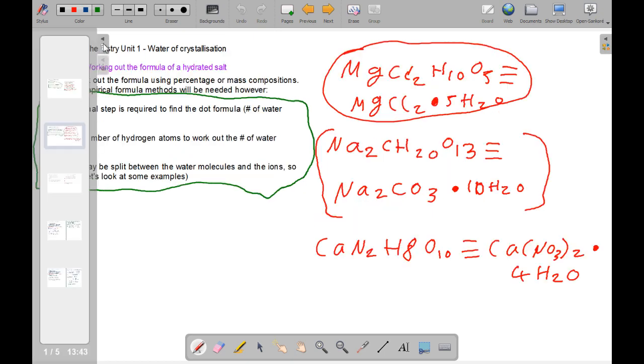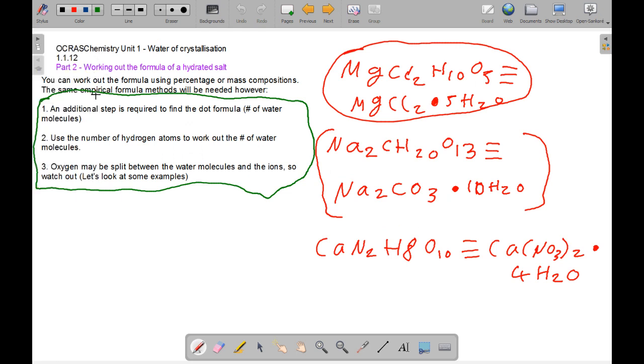I'm going to move on to part two now, working out the formula of a hydrated salt. So using percentage or mass compositions, you can work out the value of water molecules that you need in order to make the salt. You use the number of hydrogen atoms to work out the number of water molecules. And the oxygen may be split between the molecules of water and the ions.